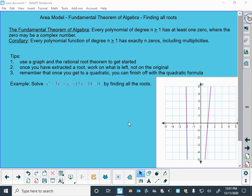A corollary to that, something that is implied by that theorem, is that every polynomial function of degree n greater than or equal to 1 has exactly n zeros, including multiplicities.